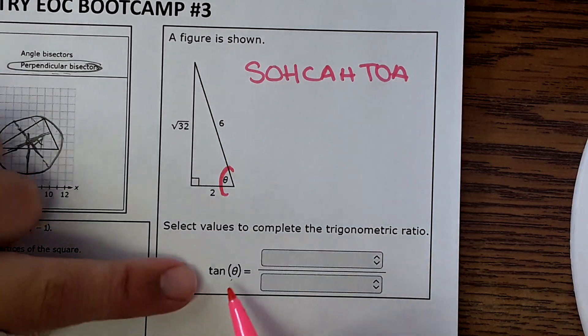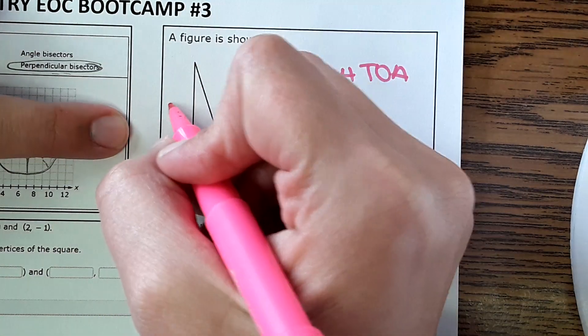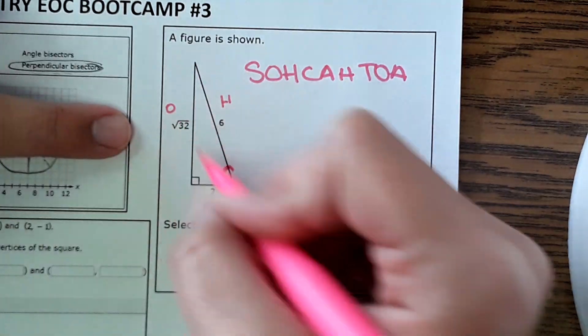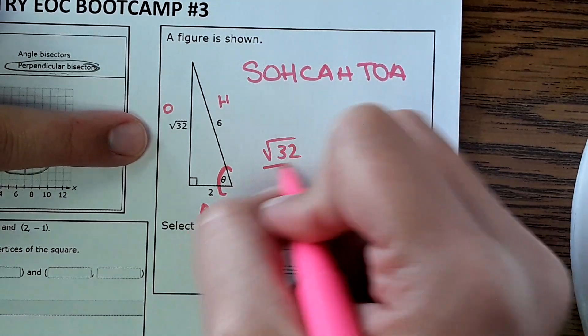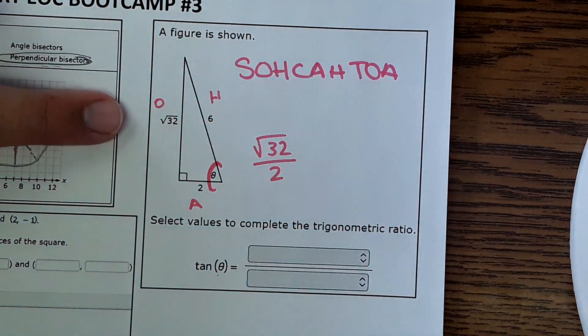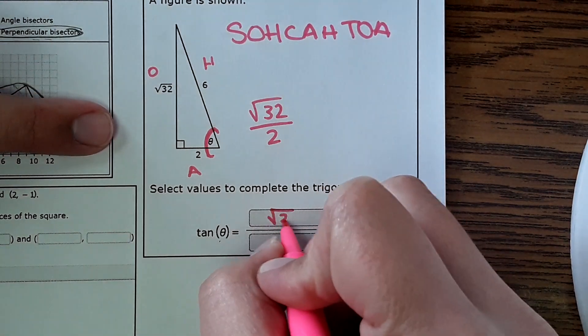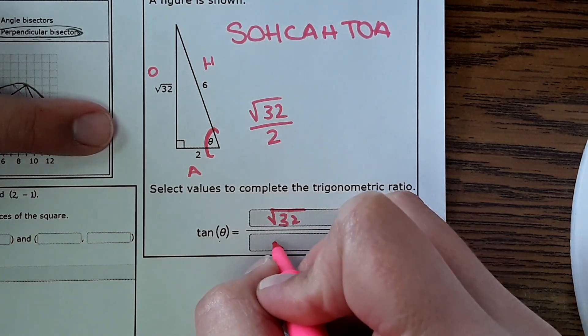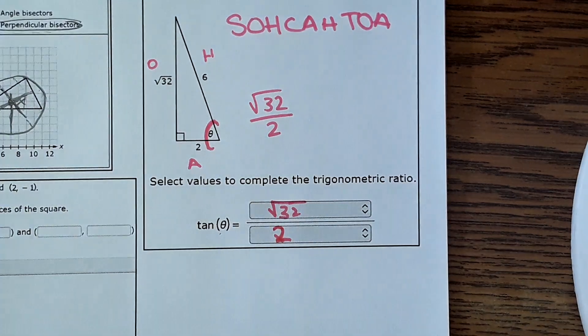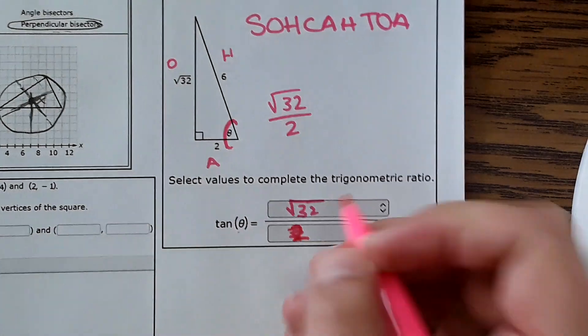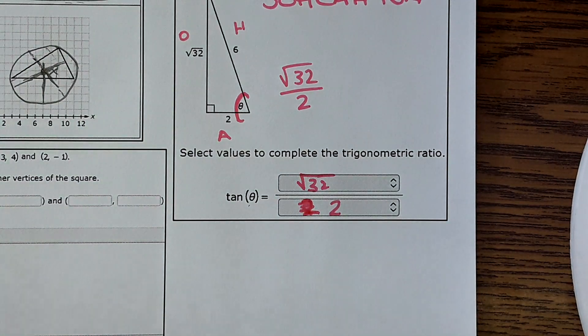Then you would also want to write down SOHCAHTOA. So it's saying tan. So that would be opposite over adjacent. So this would be your opposite side. This is hypotenuse. And then this is adjacent. So opposite over adjacent would be square root of 32 over 2. And in these boxes there's a drop down, so you'd just be choosing square root of 32 over 2. As long as you know what they're looking for there, that one's pretty easy.